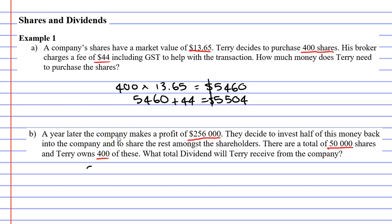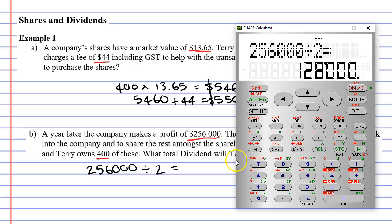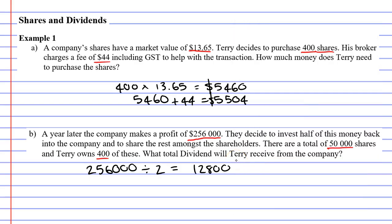The first thing we're going to do is say, we've got $256,000. Only half of this is going to the shareholders, so let's divide that by 2. $256,000 divided by 2 gives us $128,000. That's getting shared amongst the shareholders. Now, we're told that there are 50,000 shares, so we've got to split $128,000 into 50,000 parts, and we're going to do that by dividing it.